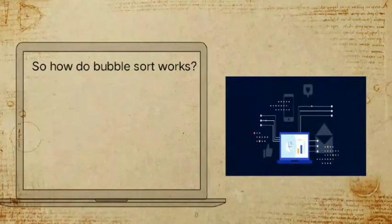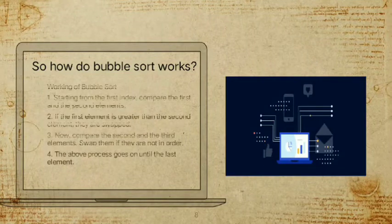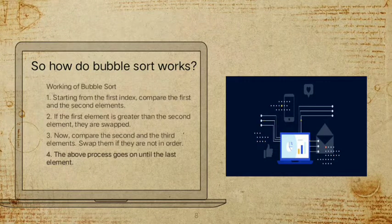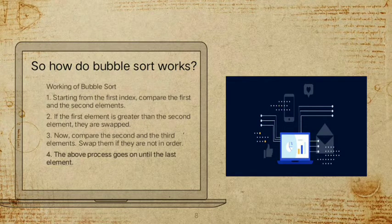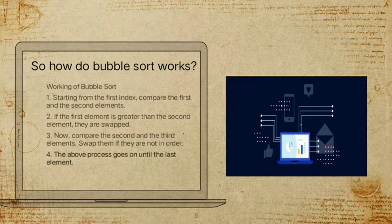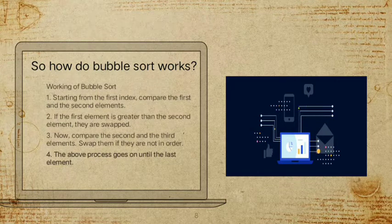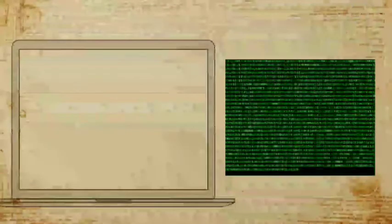How does bubble sort work? Starting from the first index, compare the first and the second elements. If the first element is greater than the second element, they are swapped. Then compare the second and third elements and swap them if they are not in order. This process goes on until the last element.